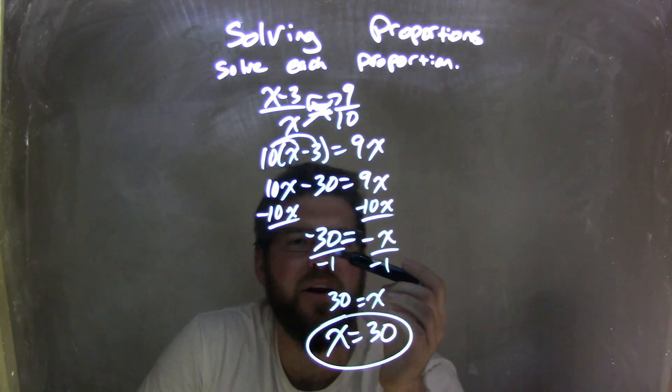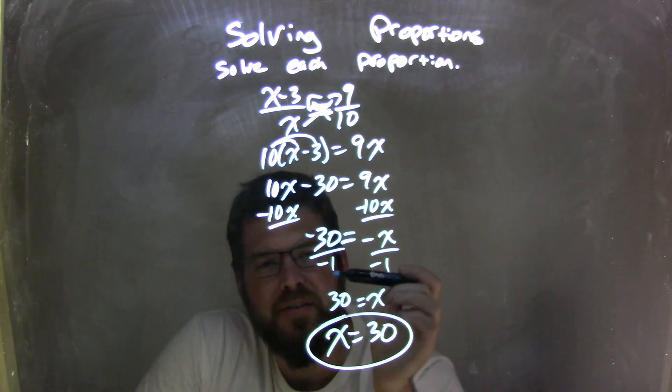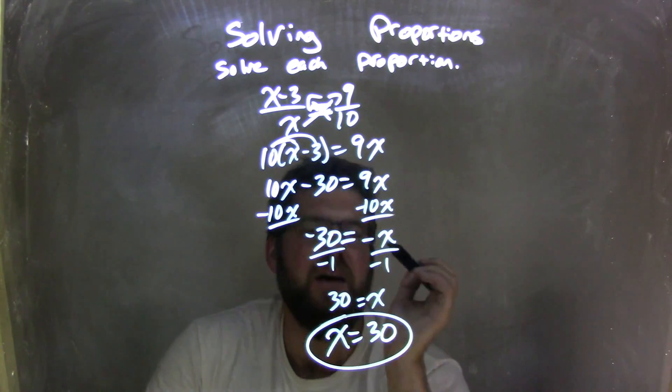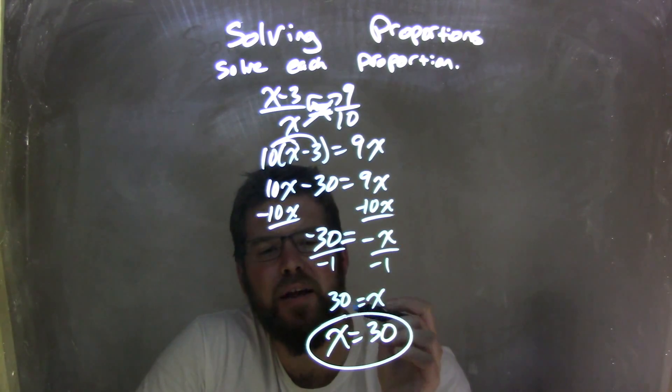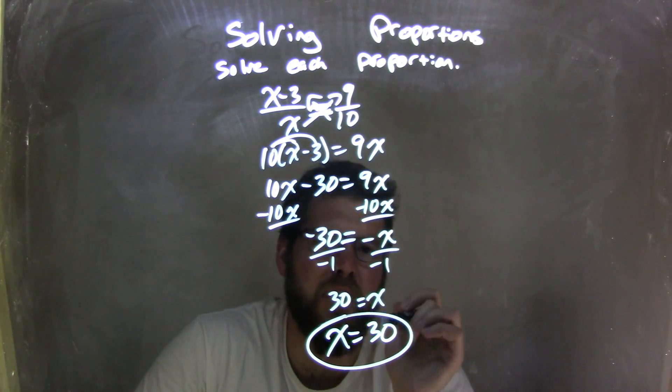That gave me negative 30 divided by negative 1, being positive 30, equals my x. Then from there, I rearranged it so the x comes first, because that looks nice and neat. So, my final answer is x equals 30.